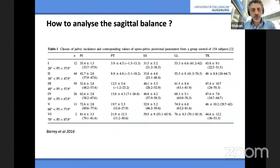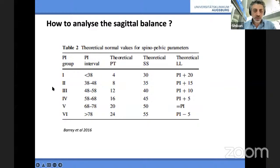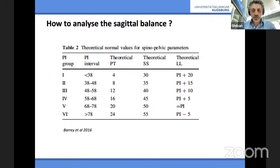We have this paper from 15 years back looking at normal individuals on whole standing X-ray. They found that most people have a definitive category of pelvic incidence. They built six groups of pelvic incidence where these are all normal variants. According to your pelvic incidence, you will have a theoretical lumbar lordosis you should have. For example, if you have a pelvic incidence of 50, you should have a lumbar lordosis of 60. If this is not responding, then something is off.